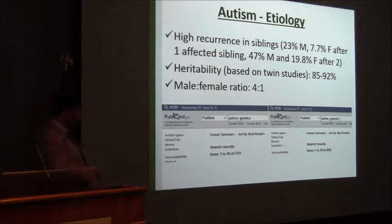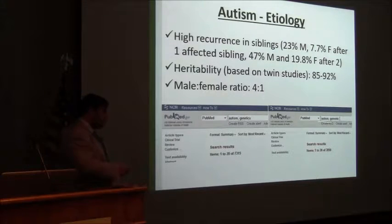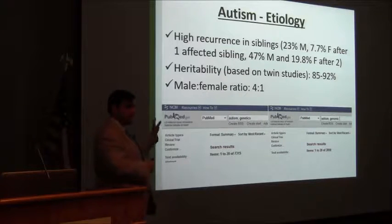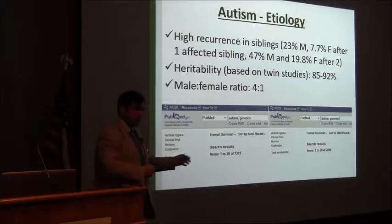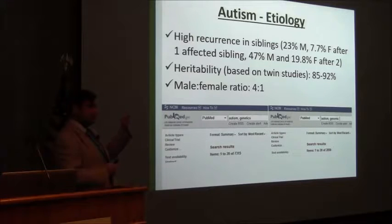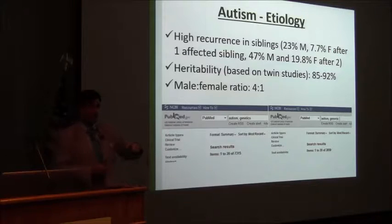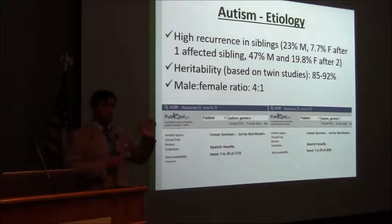When we look for autism genetics or autism genomics combined, we have one out of three papers that are based on the genetic component of autism. And this is impressive, because if we go back and look at schizophrenia, epilepsy, and intellectual disability, that's only one out of ten.